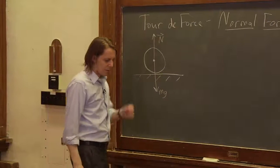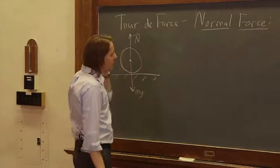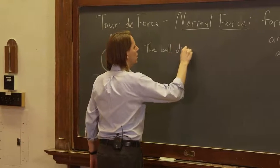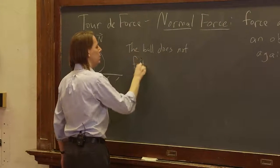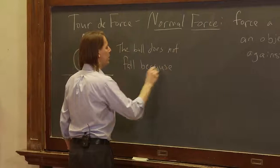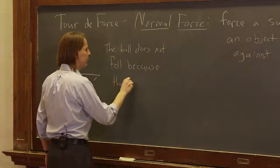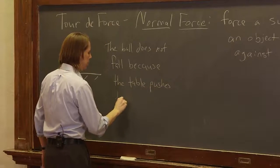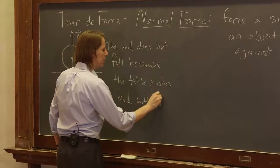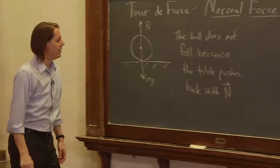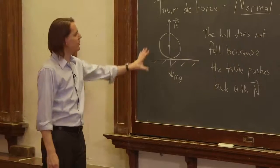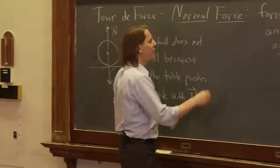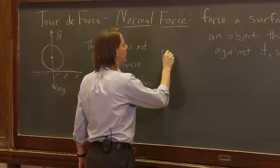All right, so we could say the ball does not fall because the table pushes back with N, normal force. Now, if you really want to analyze it, you want to do a free body diagram. Now, this is a pretty simple case. To do a free body diagram, I could practically just not have drawn the surface. But let's be proper and good and do one anyway.